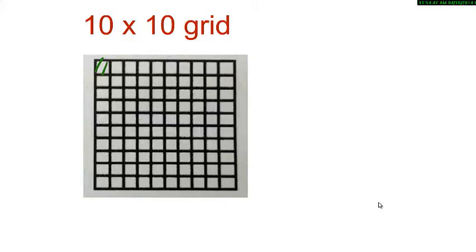1 small square represents 1 out of 100, which is 1% or 0.01 in decimal form. If I shade 10 squares, it represents 10 out of 100, which is 10% or 0.1 in decimal form.